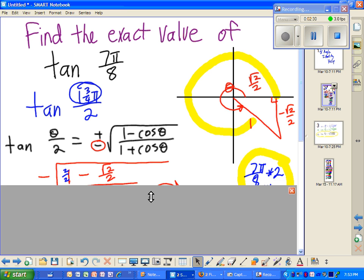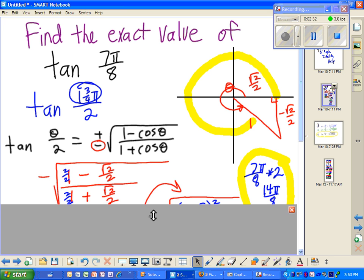And then, now I'm going to fill in the values for cosine. I know that in this triangle, cosine is square root of 2 over 2 over 1. So I'm just going to put 1 minus cosine, so 1 minus square root of 2 over 2, and then 1 plus square root of 2 over 2. So I have 1 plus the cosine at the bottom.